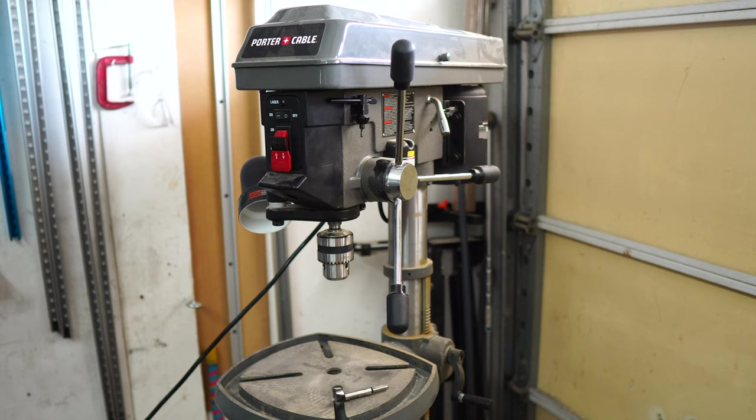The table is 13.2 by 13.2, and that is cast iron, and it does tilt 45 degrees both ways. It's got a 7.5-inch swing. It uses a 5.8-key chuck. It's got a 4-inch spindle travel.